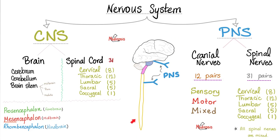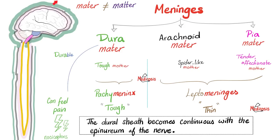The brain and spinal cord are covered with meninges: the dura mater, the arachnoid mater, and the pia mater — note it's 'mater,' meaning mother, not 'matter.' Imagine three mothers surrounding you: one tough mother — the dura mater, one spider-like mother — the arachnoid mater, and one tender, affectionate mother — the pia mater. The dura mater is tough and durable, called the pachymeninx.